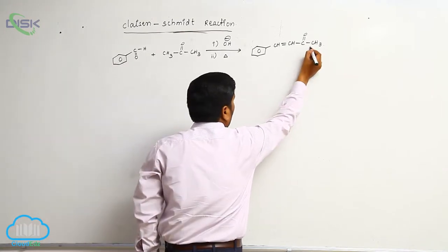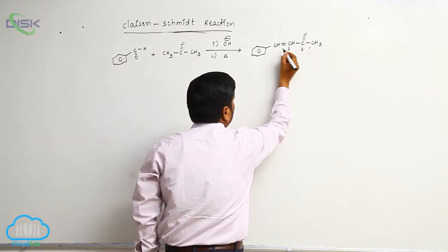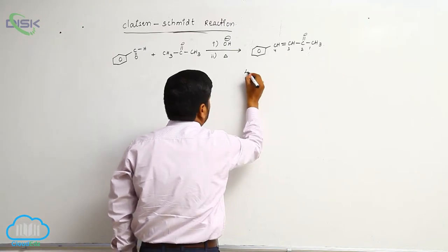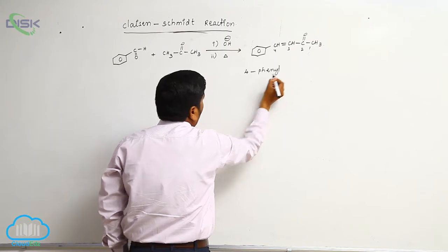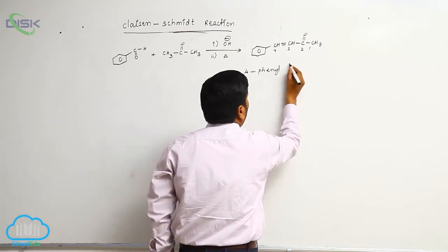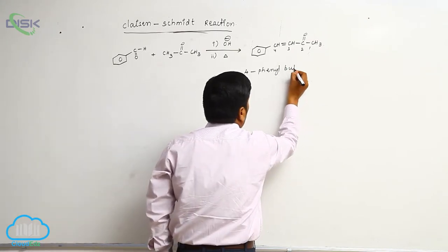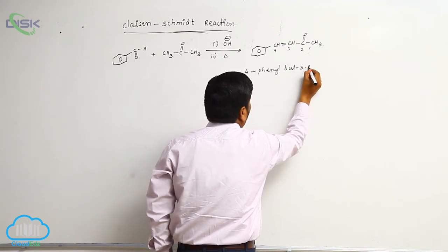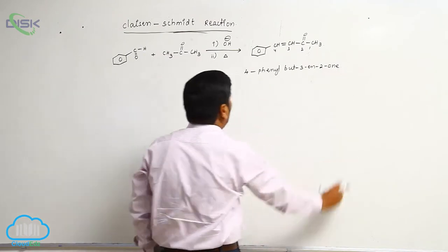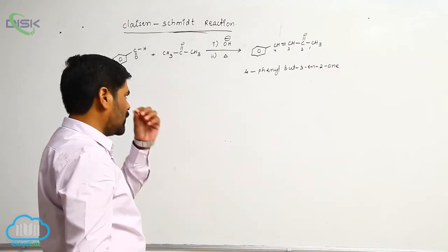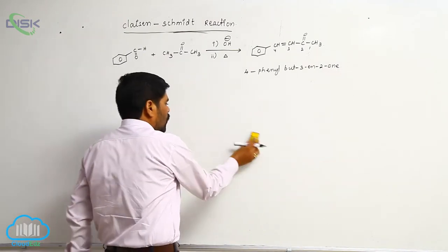If you want the name of this compound: 1, 2, 3, 4. The name is 4-phenyl-but-3-en-2-one.